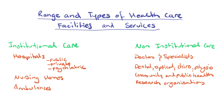When we look at the range and types of health care facilities and services, we have two big groups: institutional care and non-institutional care. Institutional care includes hospitals — whether public, private or psychiatric — nursing homes, which are like hospitals combined with a home for elderly people, and ambulances.